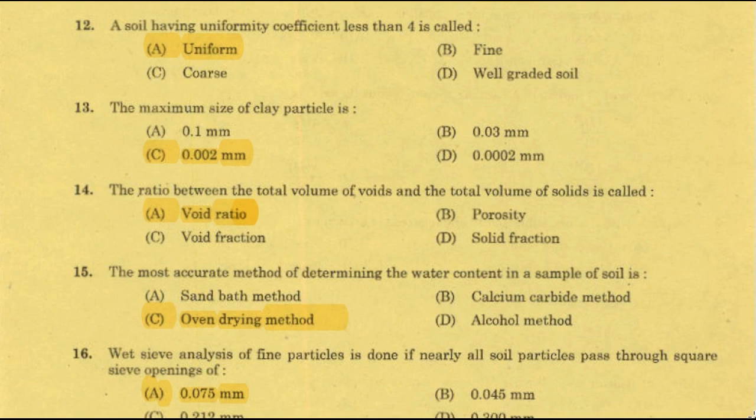Uniformity coefficient less than 4 means two conditions: one is poorly graded, or uniformly graded. The answer for this question is uniformly graded.